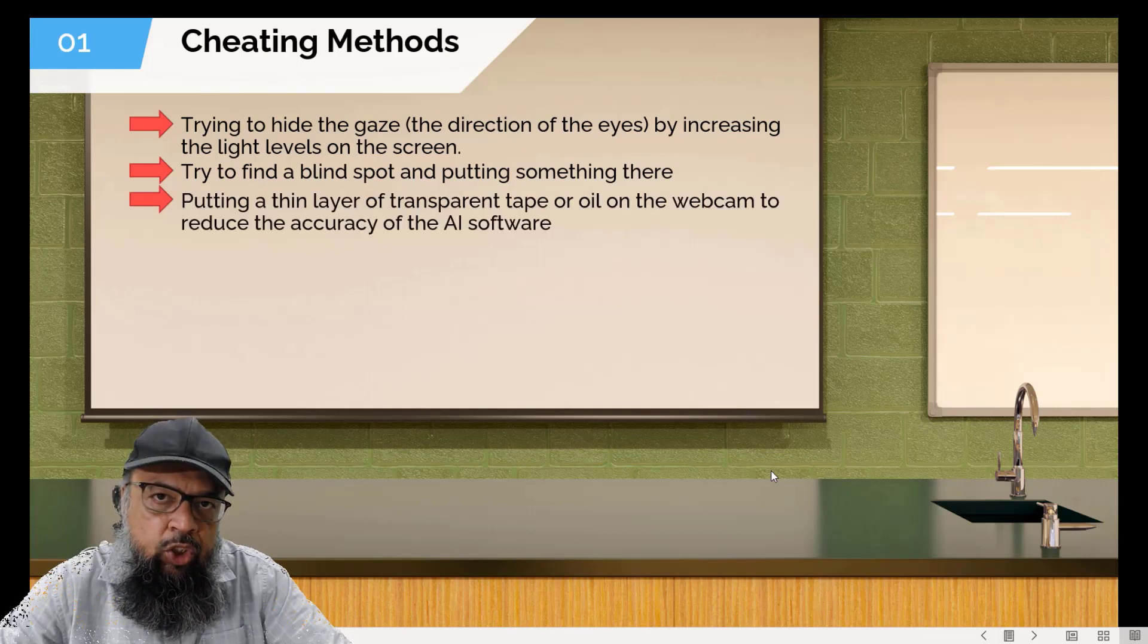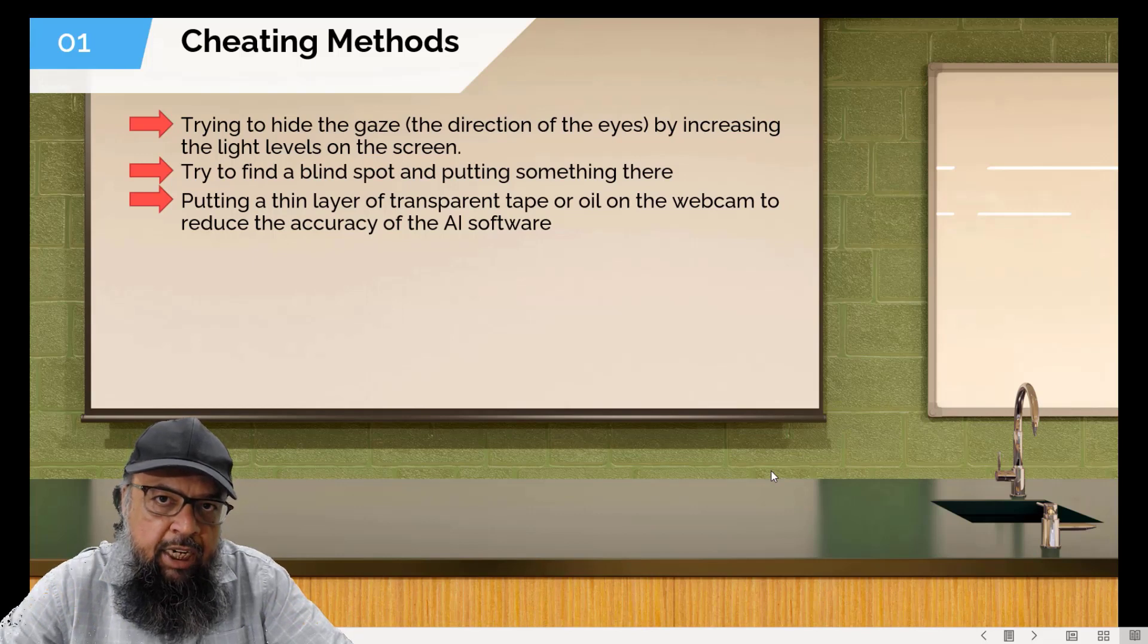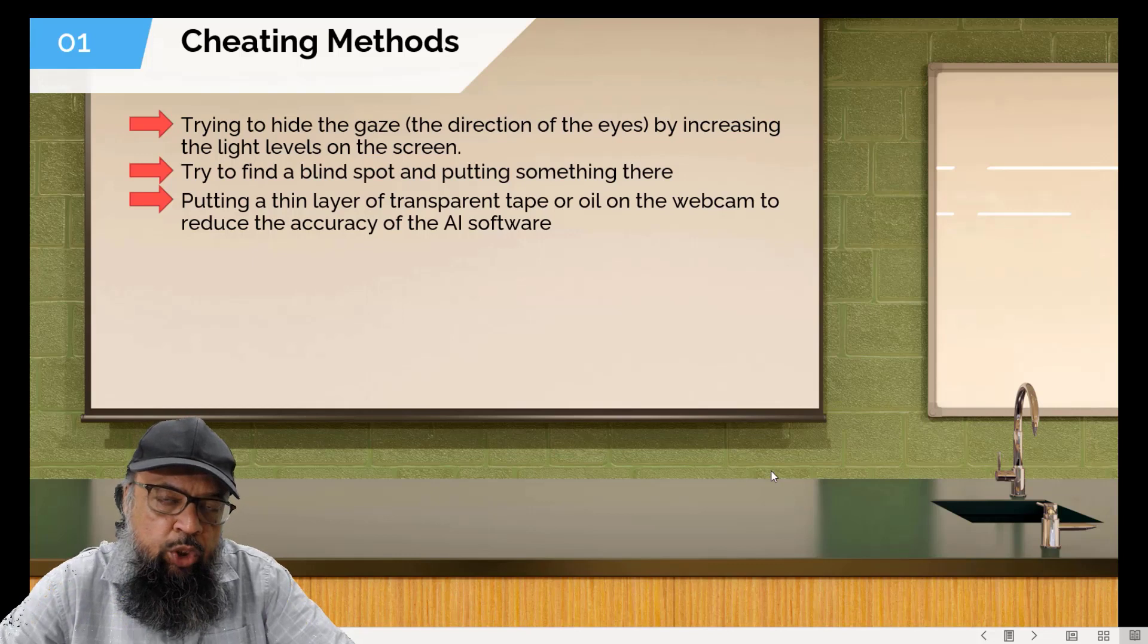Then another method is that they try to put a thin layer on their webcam to decrease the sensitivity of the online proctoring tool, because those tools work on artificial intelligence algorithms and clear visibility makes them efficient. But if they blur the visibility just a little bit, the tool might not report an incidence.